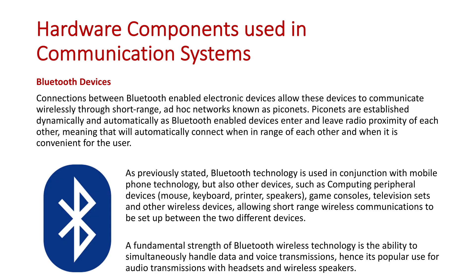Bluetooth enables devices to connect to each other within short range. It does this by setting up small networks known as Piconets. These Piconets are short-range, ad hoc networks — meaning you can set them up spontaneously on the spot. As devices come within vicinity of each other, they recognize each other. The first time two devices recognize each other and you want to connect them, you usually have to enter a verification code, after which they establish their connection, set up their parameters, and network with each other.